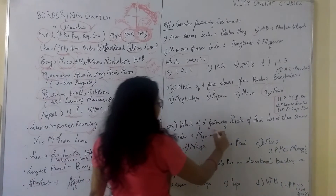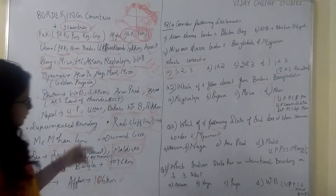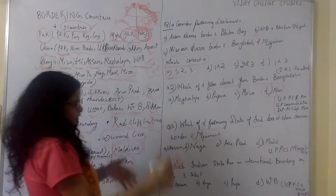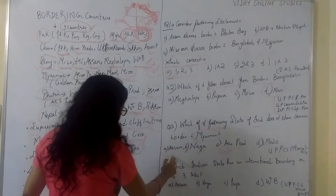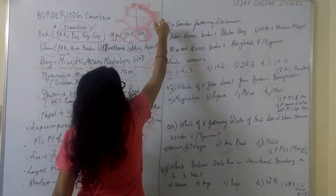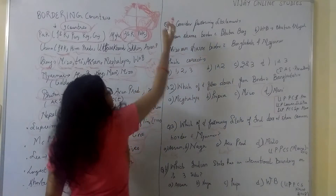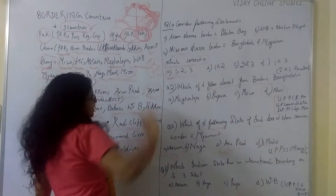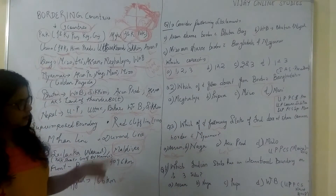Next question: Which state of India does not share a border with Myanmar? Options are Assam, Nagaland, Arunachal Pradesh, and Mizoram. Myanmar borders almost all northeast states — Nagaland, Arunachal Pradesh, and Mizoram are correct, but Assam does not border Myanmar. Assam is situated a little further in, while Myanmar covers the region through Mizoram, Tripura, Nagaland, and Arunachal Pradesh. So the correct answer is Assam. This question was also asked in UPPCS exams.